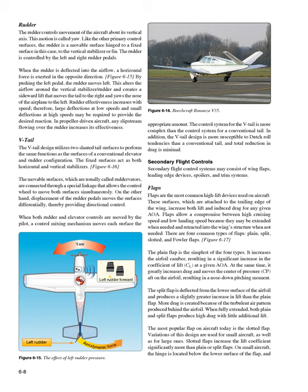Secondary flight control systems may consist of wing flaps, leading edge devices, spoilers, and trim systems. Flaps are the most common high-lift devices, attached to the trailing edge of the wing to increase both lift and drag for any given angle of attack. There are four common types: plain, split, slotted, and Fowler flaps. The plain flap increases airfoil camber, significantly increasing the coefficient of lift (CL) at a given AOA while also greatly increasing drag and moving the center of pressure (CP) aft, producing a nose-down pitching moment. The split flap, deflected from the lower surface, produces slightly greater lift than the plain flap but more drag due to turbulent air behind the airfoil. When fully extended, both plain and split flaps produce high drag with little additional lift.